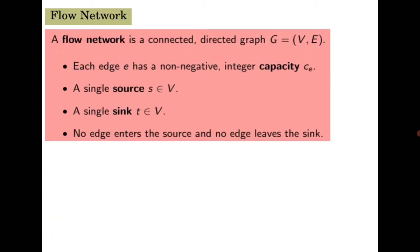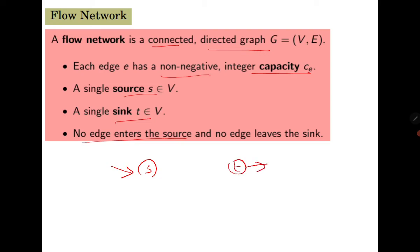Let us define mathematically what a flow network is. We need to model the problem using mathematics and then propose a solution. A flow network is a connected directed graph where each edge has a non-negative capacity — so each edge is weighted. s is a source, t is a sink. No edge can enter the source, and no outgoing edge is allowed to the sink.